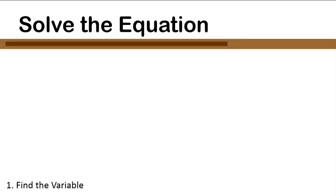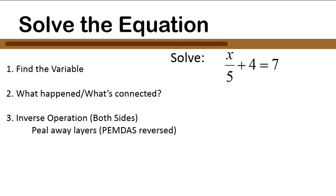In our first equation, x over 5 plus 4 equals 7, we have a fraction and we're adding 4 on the end. But that's not what we want to focus on at first. We want to follow the steps on the left. If we start looking at this equation we might get a little dizzy, but if we train our eyes, we'll be able to solve this in a straightforward way.